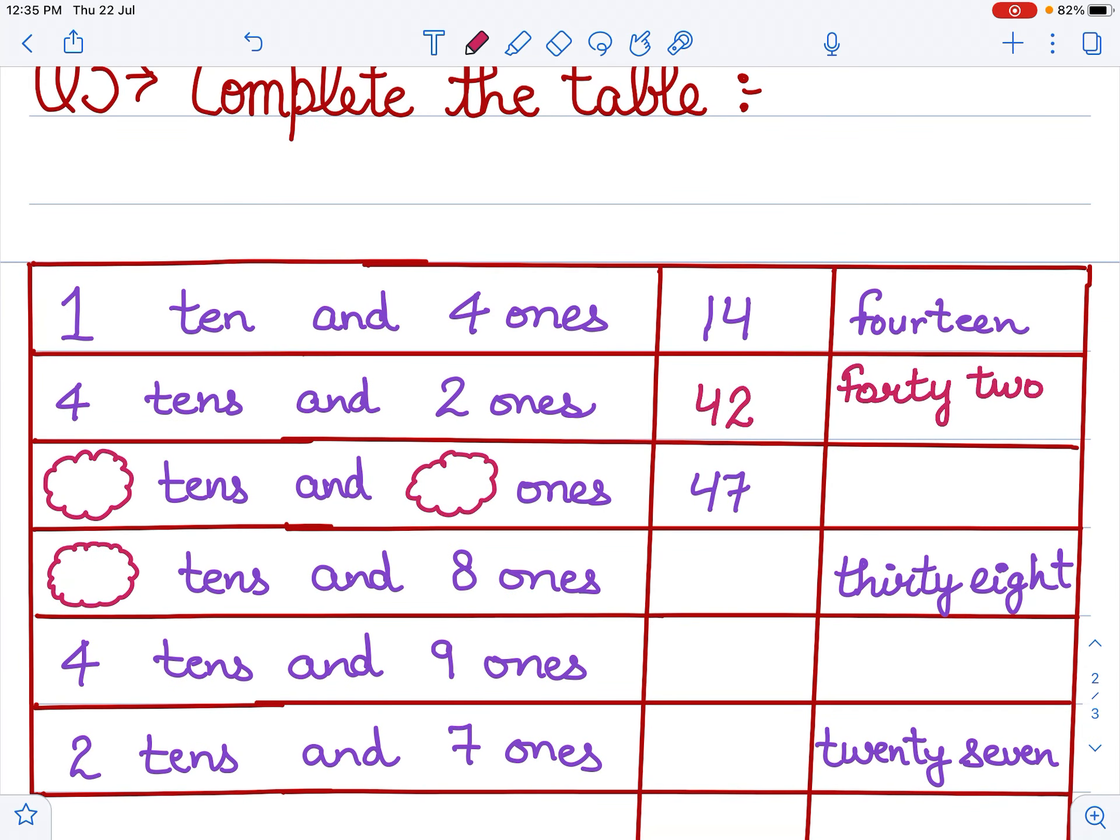We have dash tens and dash ones. What is it? Four tens and seven ones, 47. Look, 47 is written here. So we have here four tens and seven ones. Now we will write in words. 47: f-o-r-t-y s-e-v-e-n.